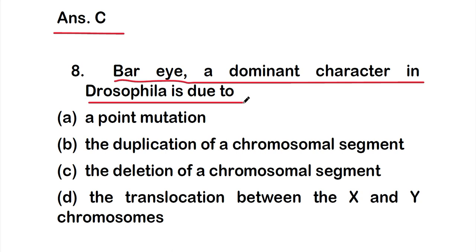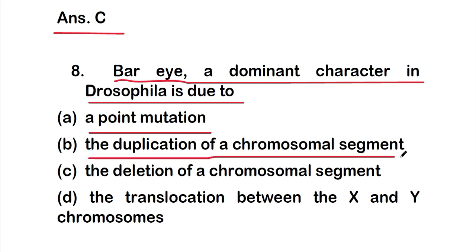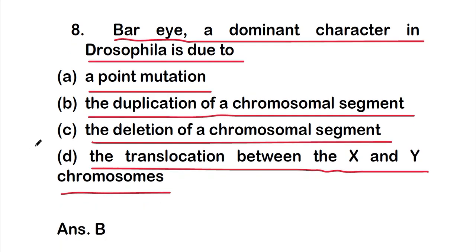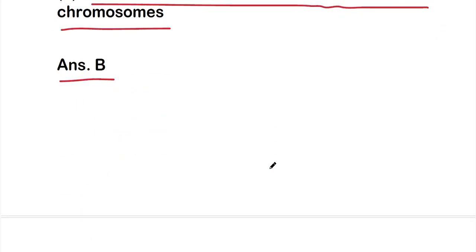Question eight: Bar-I, a dominant character in Drosophila, is due to — option A: point mutation, option B: duplication of a chromosomal segment, option C: deletion of a chromosomal segment, or option D: translocation between X and Y chromosomes. The right answer is option B, the duplication of a chromosomal segment.